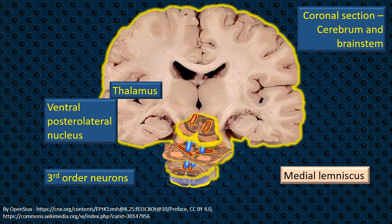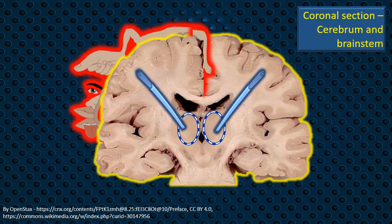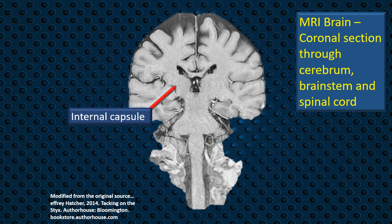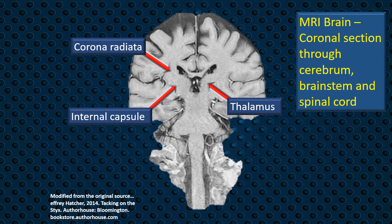You can see the fibers ending in the thalamus in the diagram. From the thalamus, the third-order neurons' axons go through the internal capsule and corona radiata to the sensory cortex of the cerebrum — what we generally call the sensory homunculus — showing the proportion in which various body parts are represented for sensory modalities. This is also visible through an MRI brain coronal section showing the internal capsule, thalamus, and corona radiata. This tract thus starts from the dorsal root ganglia and ends in the cerebral cortex.